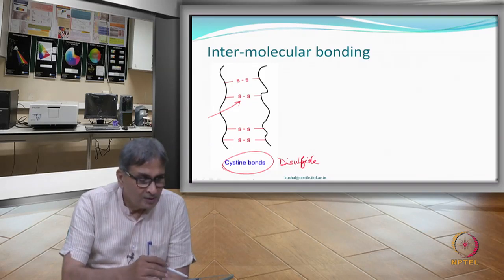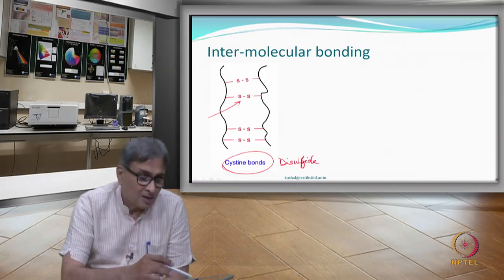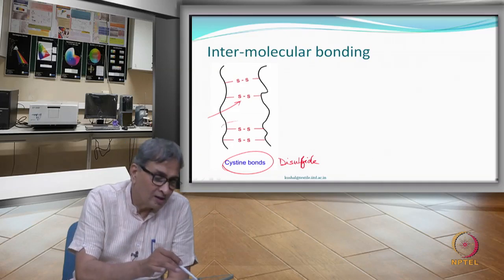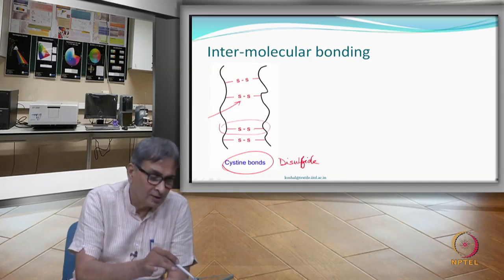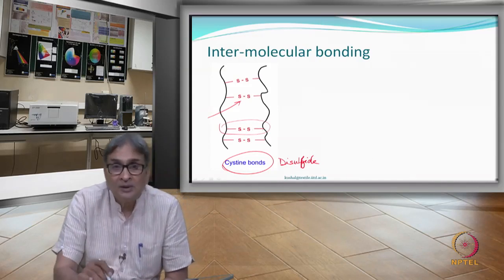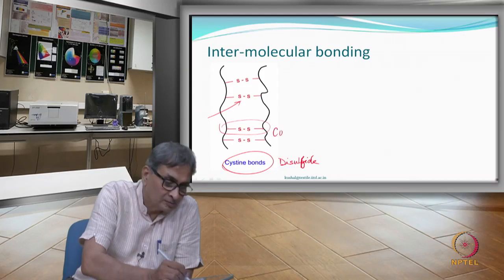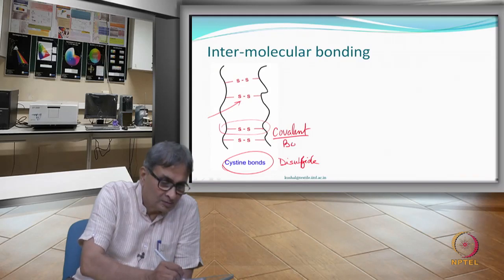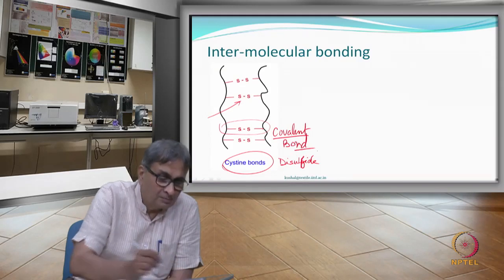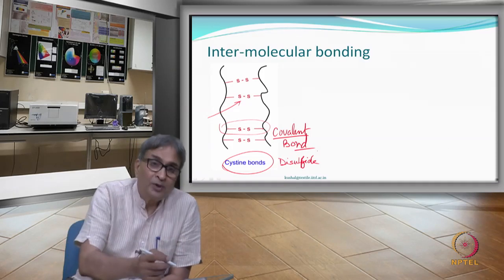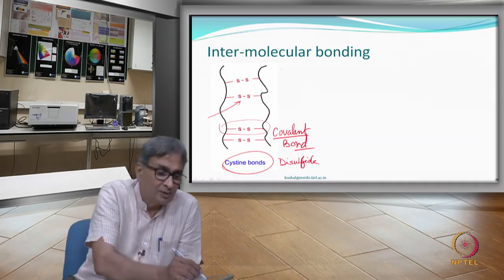This structure has bonds called cysteine disulfide bonds. These bonds are covalently linked — carbon to sulphur to sulphur to carbon — they are covalently linked.